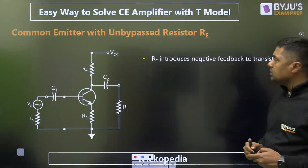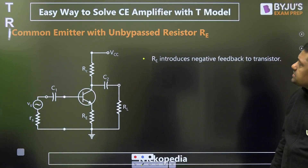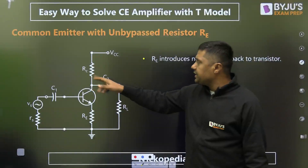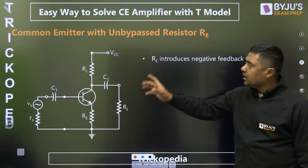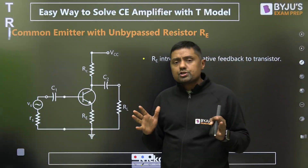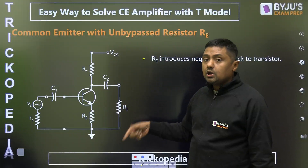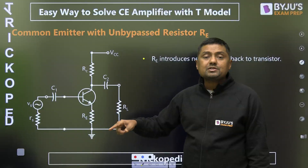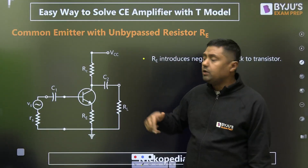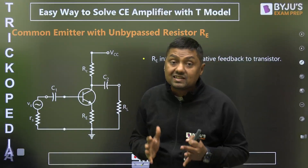We will apply this T model to the circuit. This is the common emitter with bypassed resistor and unbypassed resistor RE — a very important diagram. RC is connected here to coupling capacitor, C1 and C2, and RL is connected. We will solve different questions: when RL is not present, when RE is not present, when RE is bypassed with a capacitor, and when RC is in parallel with RL — what will be the voltage gain?